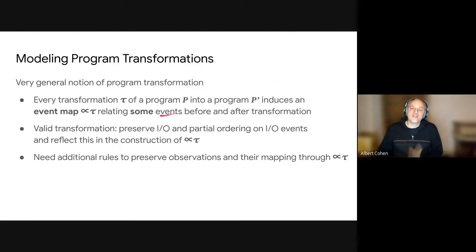And on top of that, we associate every transformation of a program P into program P prime with a so-called event map, which is a relation that relates events before and after transformation. So this relation has to also relate I/O events before and after transformation. So we'll define additional rules, obviously, because this is a little bit weak, without more information about this map, but we're going to use this map, this event map, to prove properties of transformations with respect to the observations we want to preserve.